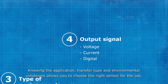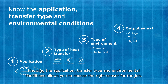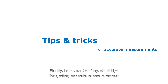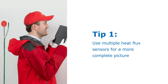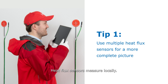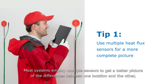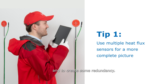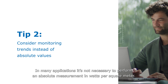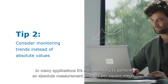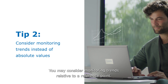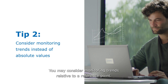Knowing the application, transfer type, and environmental conditions allows you to choose the right sensor for the job. Here are four important tips for getting accurate measurements. Heat flux sensors measure locally; most systems employ multiple sensors to get a better picture of differences between locations and to create redundancy. In many applications, it's not necessary to perform an absolute measurement in watts per square meter — you may consider monitoring trends relative to a reference point.